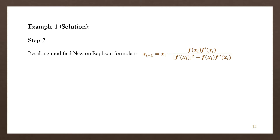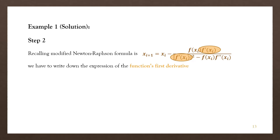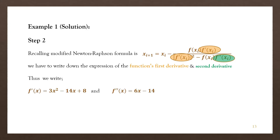In step two, we recall the modified Newton-Raphson formula, and we write down the expressions for the first and second derivatives of the function. The first derivative of the cubic function is f prime x equal to 3x squared minus 14x plus 8, and differentiating once more gives the second derivative f double prime x equal to 6x minus 14.